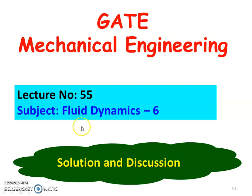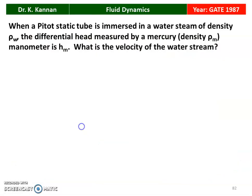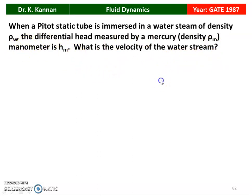We take a few questions in the topic of fluid dynamics from the GATE questions and discuss the answers. The first question is from 1987: when a pitot static tube is immersed in water, a water stream of density rho_w, and the differential head measured by a mercury manometer of density rho_m is H_m. What is the velocity of the water stream?